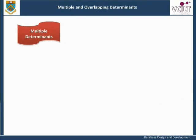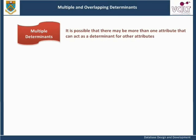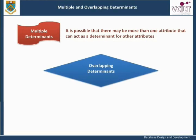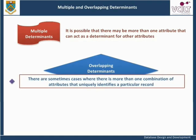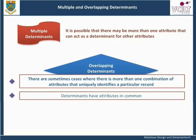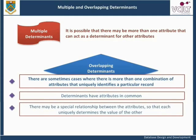Multiple Determinants: It is possible that there may be more than one attribute that can act as a determinant for other attributes. Overlapping Determinants: There are sometimes cases where there is more than one combination of attributes that uniquely identifies a particular record. This means that the determinants have attributes in common. In certain circumstances, there may be a special relationship between the attributes so that each uniquely determines the value of the other.